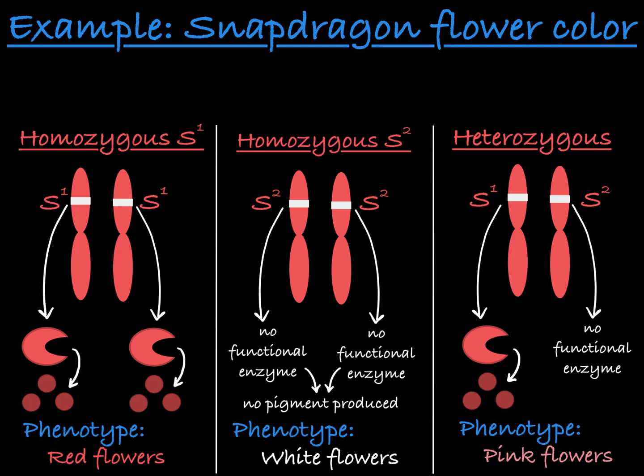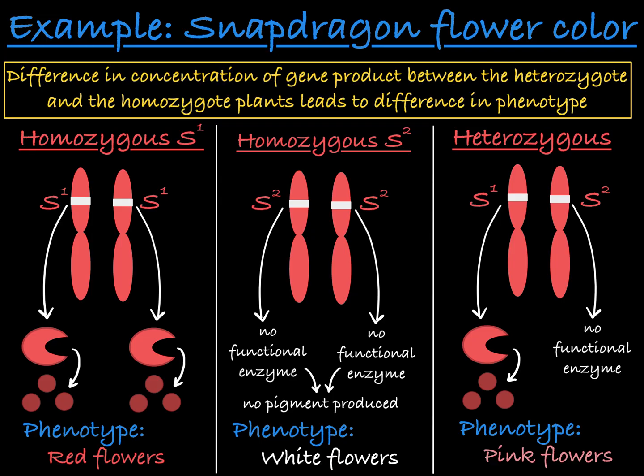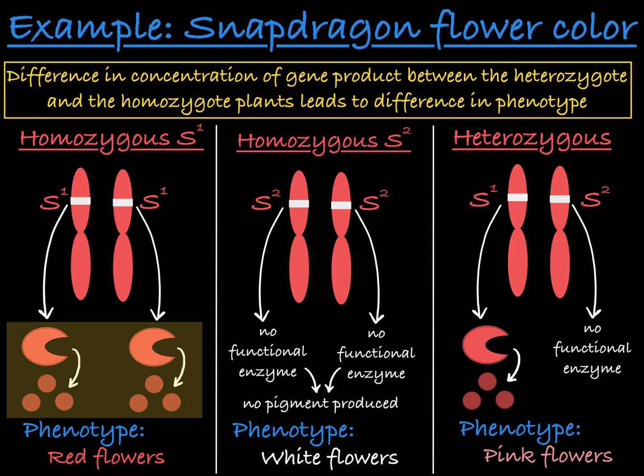So in this case, the concentration of the gene product determines phenotype. Having two S1 alleles expressed from a homozygote results in double the amount of functioning enzyme, which leads to a darker red phenotype than a heterozygote that only has one allele producing the functioning enzyme.